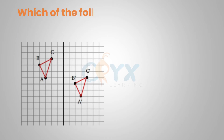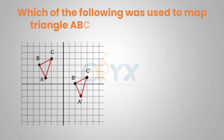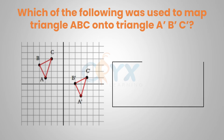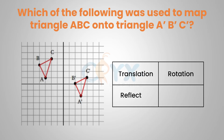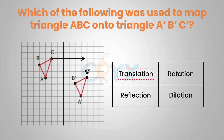Which of the following was used to map triangle ABC onto triangle A prime, B prime, C prime? We can see that figure ABC was simply shifted to the right and down from its original position. If the figure was not rotated or reflected in any way and has the same orientation, then that is a translation. A translation is a vertical and horizontal shift.